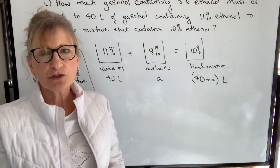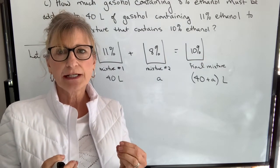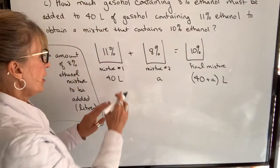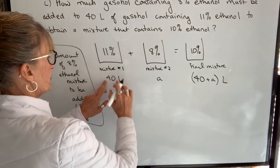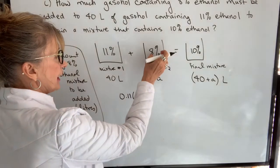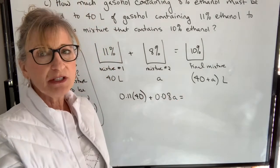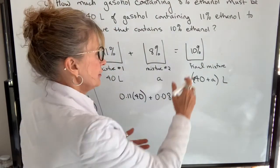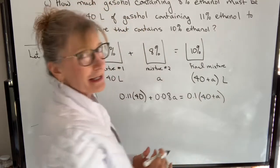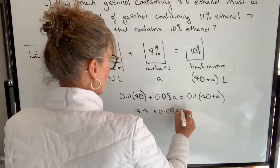The key to all of these mixture questions is you focus on one component and find that amount in each of the mixtures — those two amounts should add up to equal the amount of that component in the final mixture. How much ethanol is in the first mixture? I have 11% of 40. I add to that the amount of ethanol in my second mixture, which will be 8% of its volume, A. That should equal the amount of ethanol in the final mixture: 10% of 40 plus A.